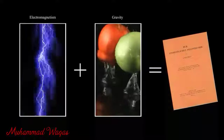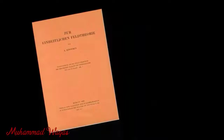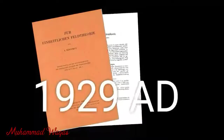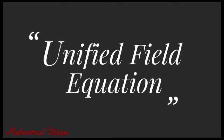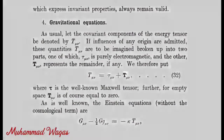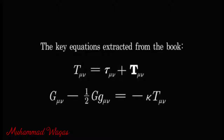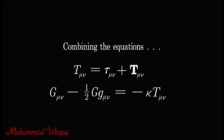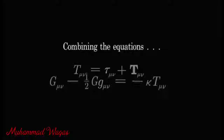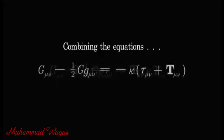Albert Einstein was finally able to create the unified field theory in 1929. We can obtain the unified field equation from the two key equations of gravitation and electromagnetism. Combining these two equations, we get Einstein's unified field equation.